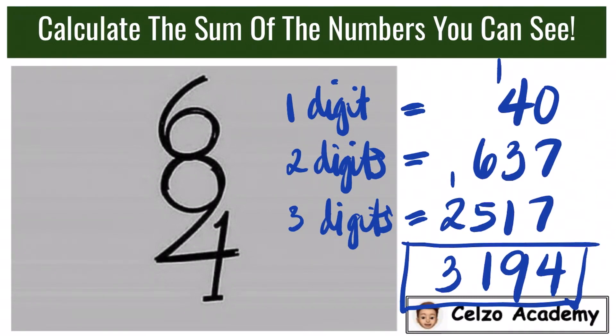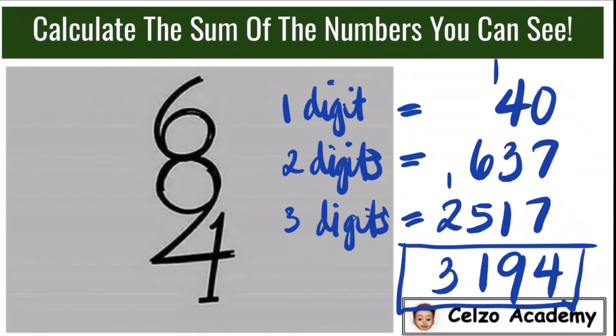So this answer is based on the perspective if we are also including two-digit and three-digit numbers. Did you get a different answer? Please write your comments below and include the reasons for your answers. Thank you for watching and please consider subscribing to my channel at Celso Academy.